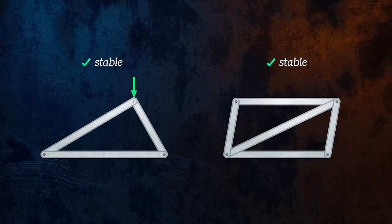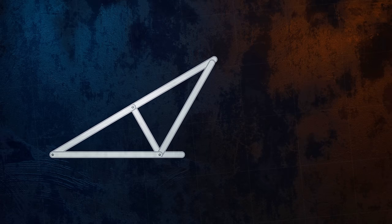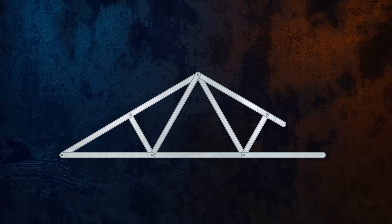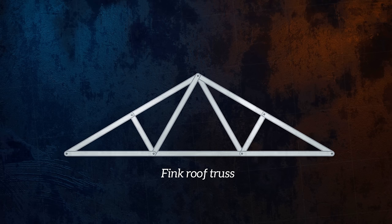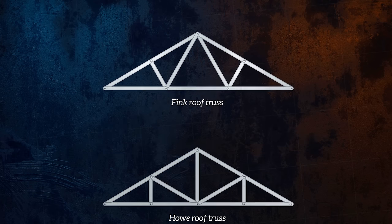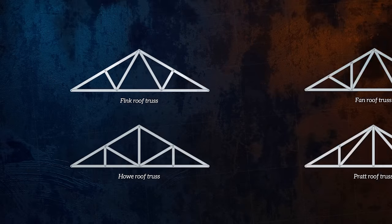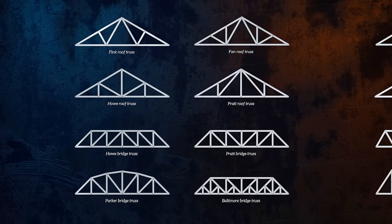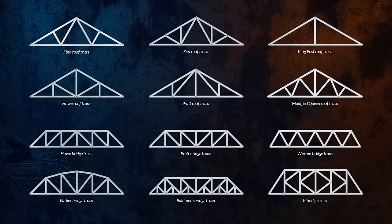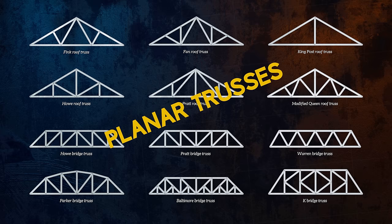An easy way to stabilize this configuration is to add a diagonal bracing member to split it into triangles. We can start with our triangle and build it out to form a structure. There are a lot of different ways to build a truss, but there are some particularly popular truss designs that you will see again and again, referred to by specific names. The one shown here is a Fink roof truss. The members of these trusses are all located in the same plane. These are called planar trusses, and we can analyze them as two-dimensional structures.